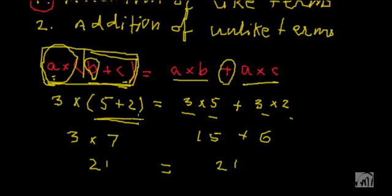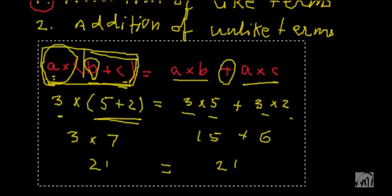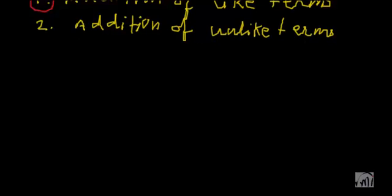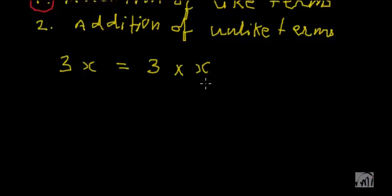You must be wondering why I am talking about this. We are talking about this because in algebra we deal with terms which have both constants and variables, written in quick succession, which means they are in multiplication. For example, 3x is nothing but 3 times x. We have learnt this many times in earlier videos.